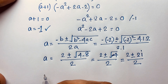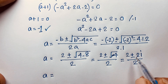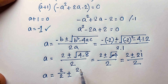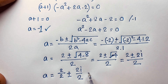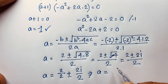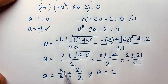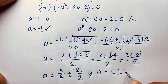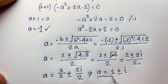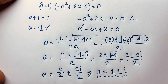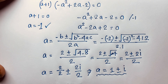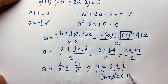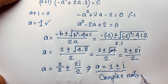Now, √(−4) equals ±2i, since √(−1) = i. So we get (2 ± 2i) / 2. Separating the fraction: 2/2 ± 2i/2, which gives 1 ± i. So the complex solutions are a = 1 + i and a = 1 − i. These are complex roots — both are complex roots.